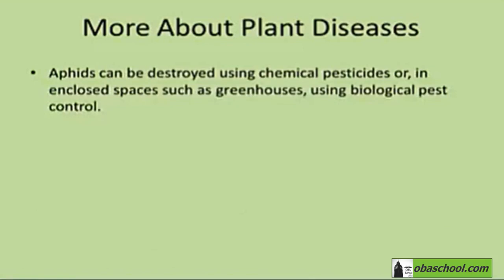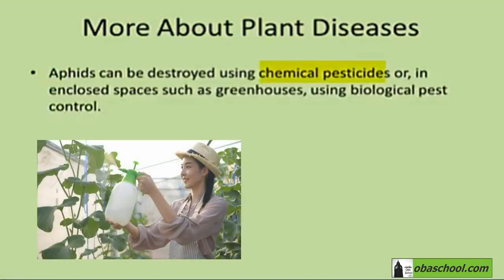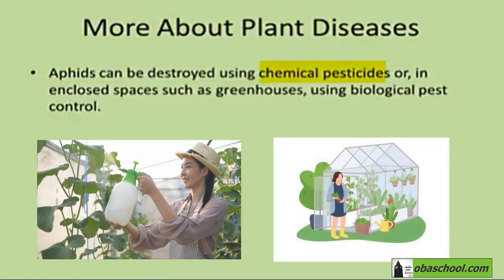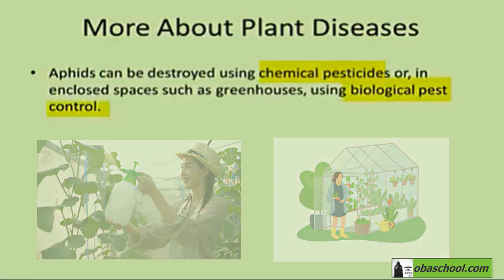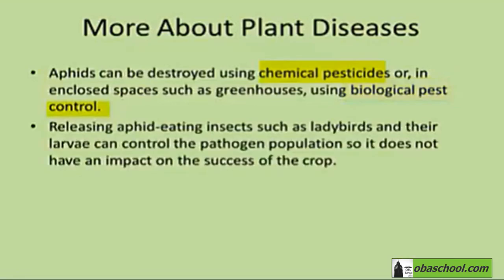Aphids can be destroyed using chemical pesticides, or in enclosed spaces such as greenhouses, using biological pest control. This is by releasing aphid-eating insects such as ladybirds, and their larvae can control the pathogen population so it does not have an impact on the success of the crop.